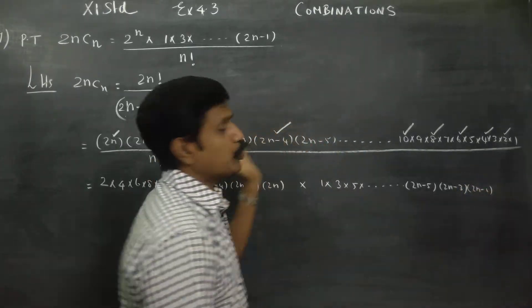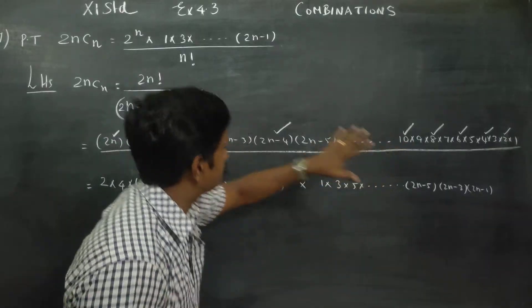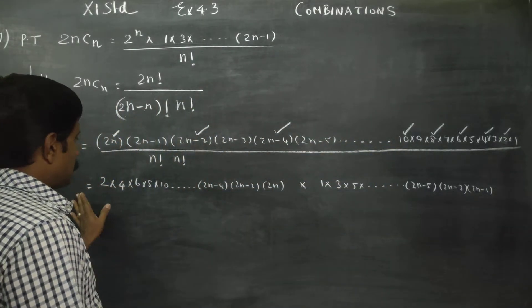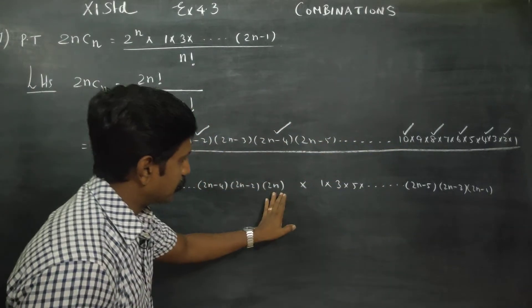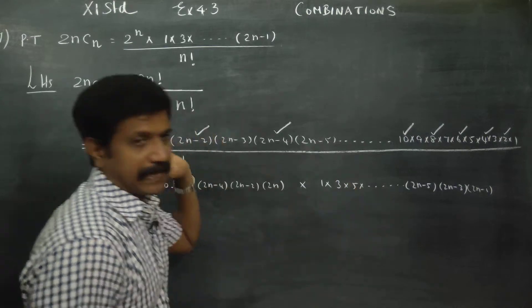So in the numerator, it is a mixture of even numbers as well as odd numbers — one full set of even number pairs and one full set of odd number pairs.